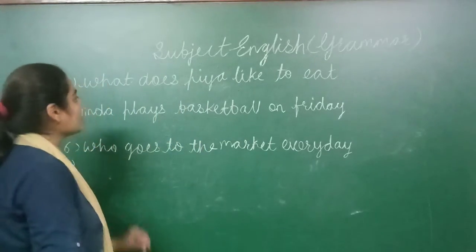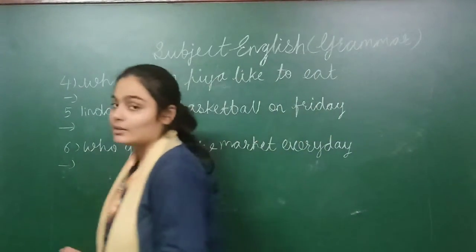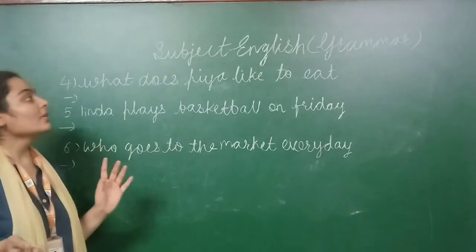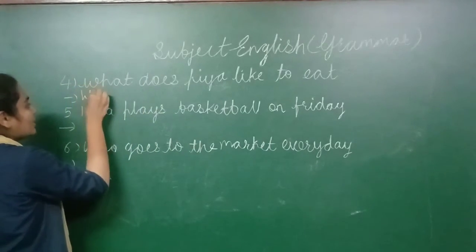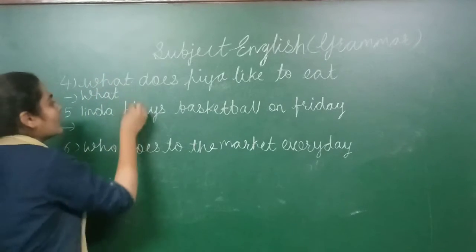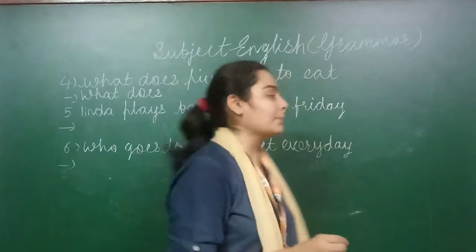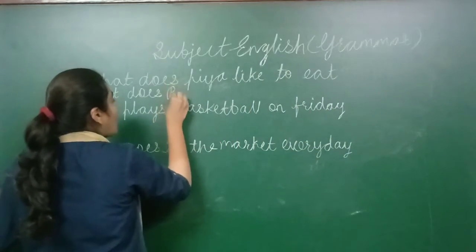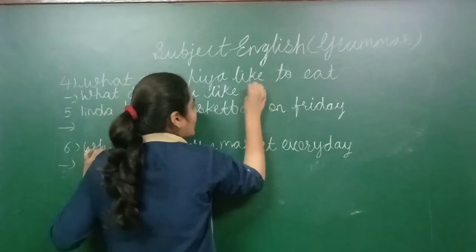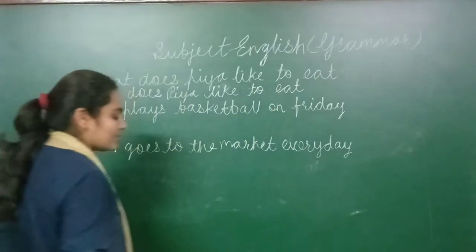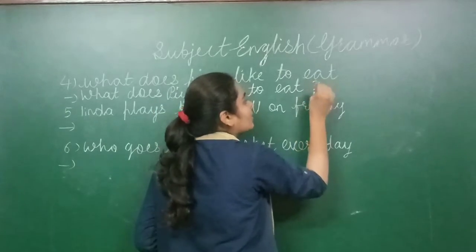Next sentence — example four: 'What does PR like to eat?' A question is there in this sentence. First of all, the first letter W must be written in capital. Since a question is present, we are not supposed to put a full stop — we have to put a question mark.